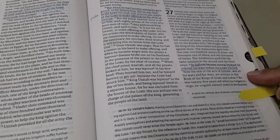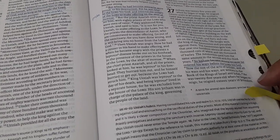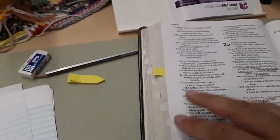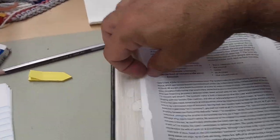So we have Jotham next. He was strong because he ordered his ways before the Lord, his God. So wisdom, discipleship, the following of the Lord, seeking God's face, things like that.